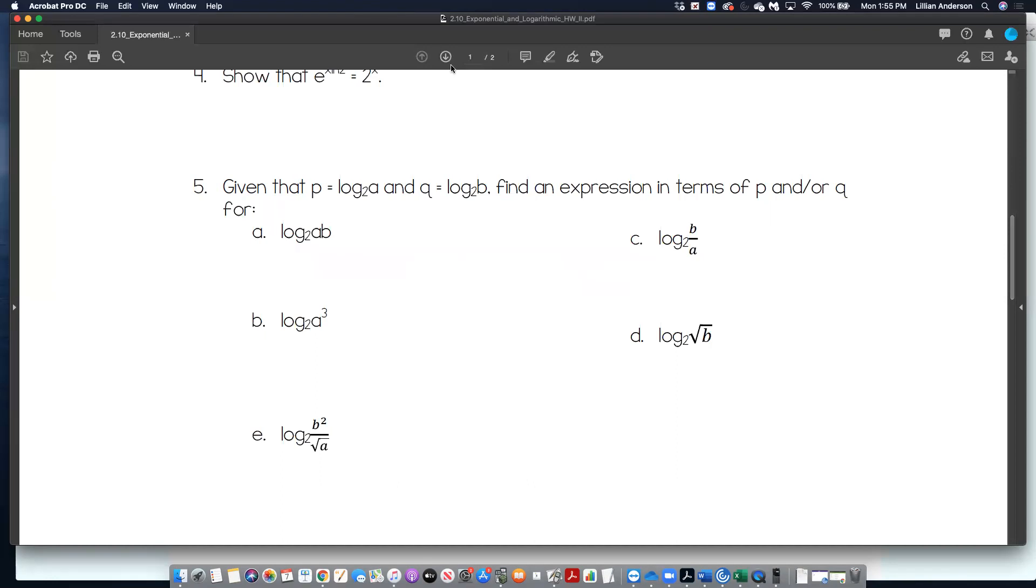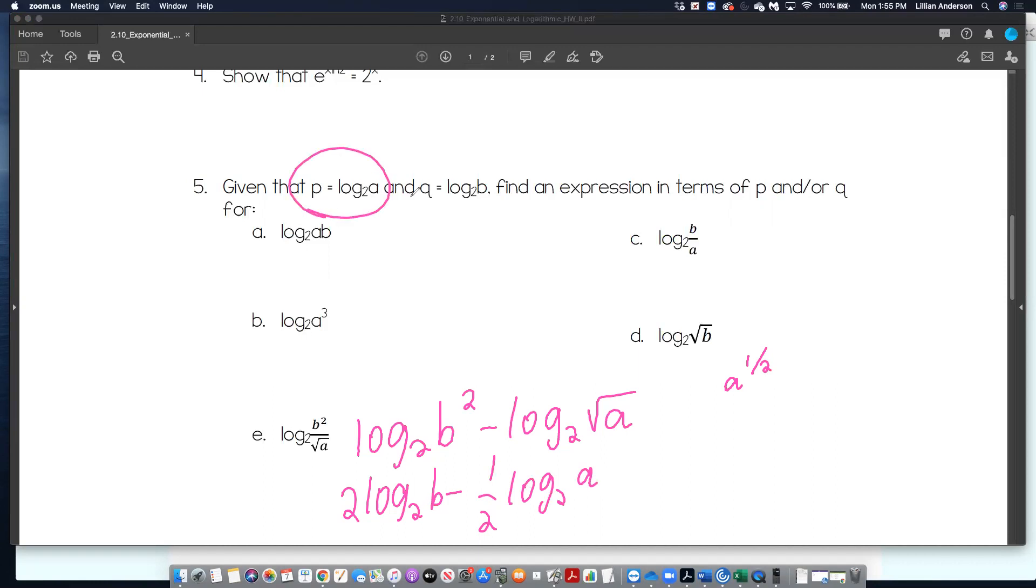So just real quick. Let's do this one. This one looks a little bit more involved. You will want to, again, continue to expand this by taking the division to a subtraction. Taking any exponents and bringing them to the front of your log. So remember, the square root of A is the same thing as saying what? So that's A to the one-half. So that's technically another exponent that can be brought to the front. And now that it's fully expanded, I can replace log base 2 of A with P and log base 2 of B with Q. So my final answer would be 2Q minus one-half A.